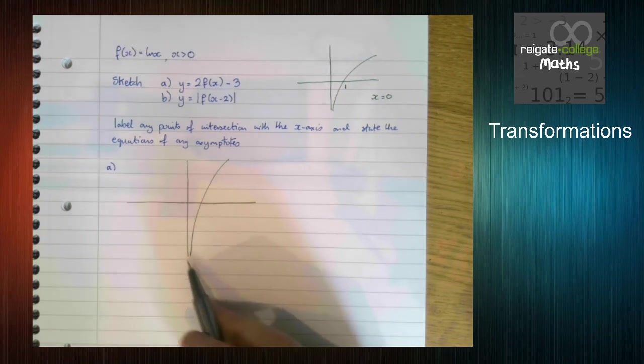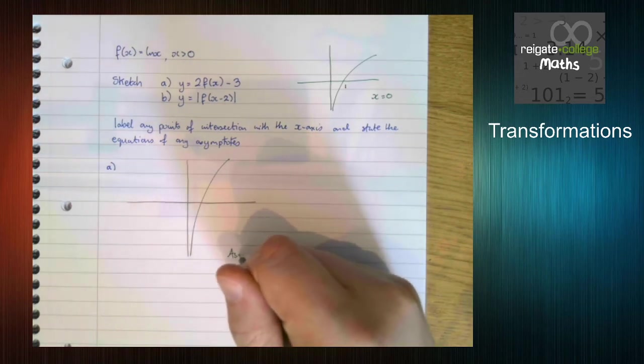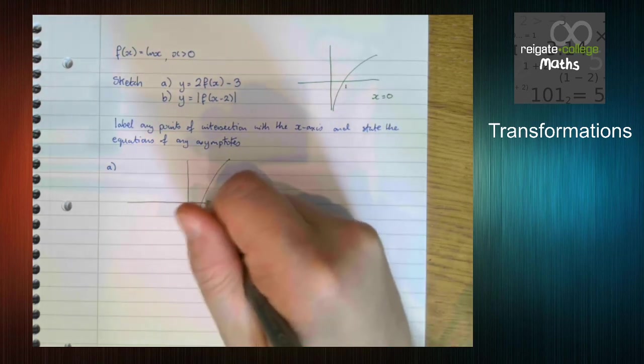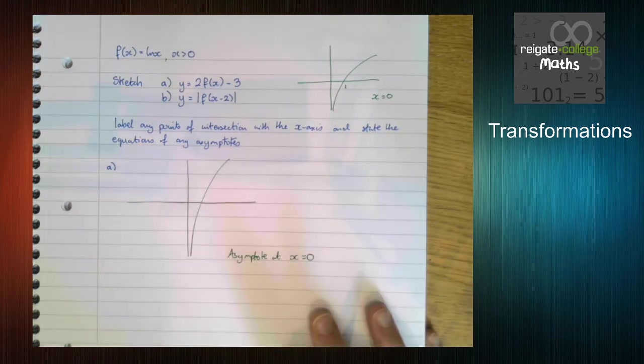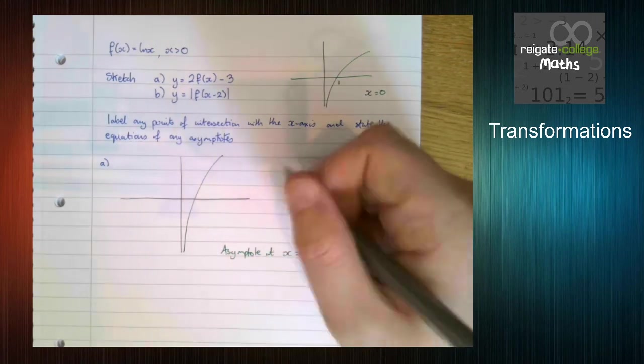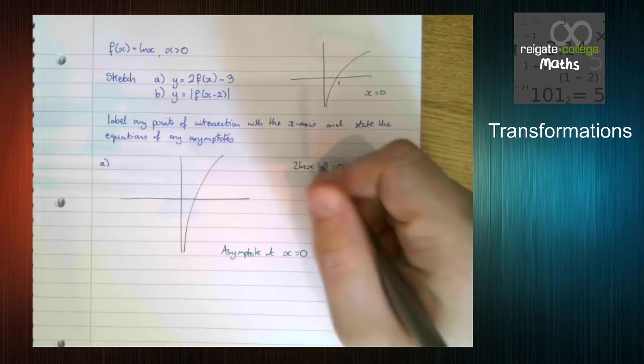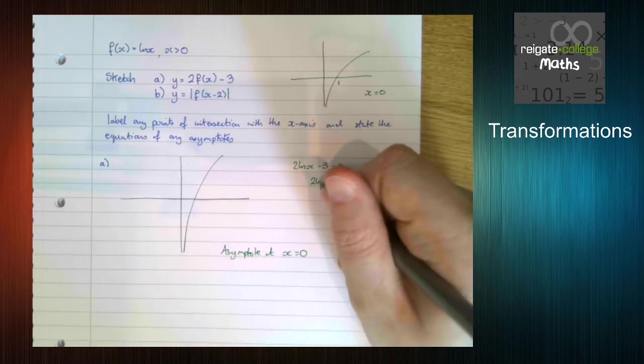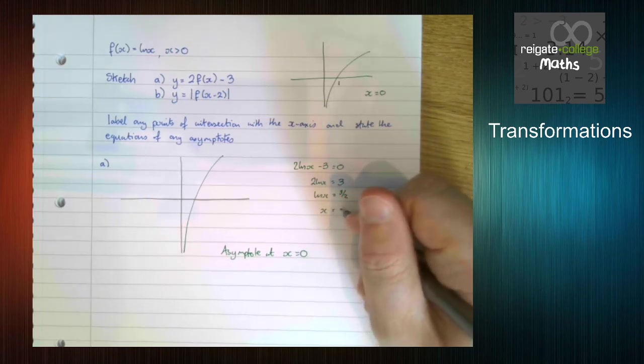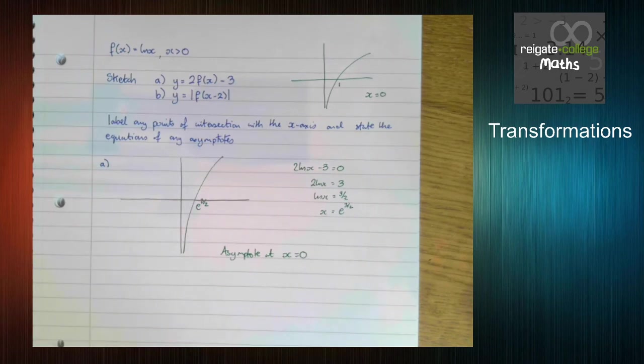Now we can see that the asymptote, because the asymptote is to do with x, the asymptote hasn't changed. But the x coordinate has. So if you can't kind of work it out from the transformations, which in this case would be very difficult to do, just work it out normally. So we know that 2 ln x minus 3 equals 0. This is our new equation. So 2 ln x equals 3. ln x is 3 over 2. x equals e to the 3 over 2. And that's that question done.